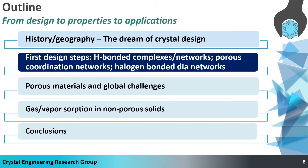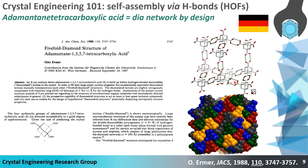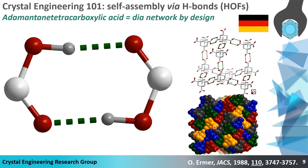Let's talk about the first crystal engineering baby steps — those design steps that resulted in crystal structures designed from first principles. What happened in 1988? A paper I'm calling Crystal Engineering 101: the self-assembly of adamantane tetracarboxylic acid through hydrogen bonds to form a diamondoid, or DIA, network by design. Some people now call these hydrogen-bonded organic frameworks, or HOFs. There were two interesting aspects: the self-assembly into the predictable network, and the existence of interpenetration — in this case, five-fold interpenetrated. This structure relied upon the carboxylic acid dimer hydrogen bond.